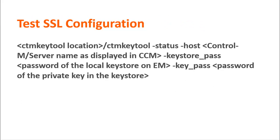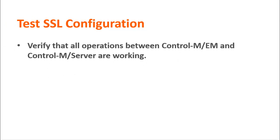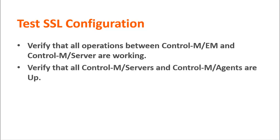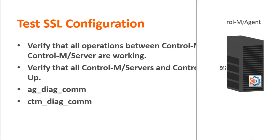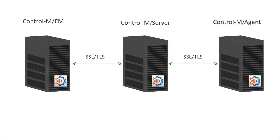Test the SSL configuration between Control-M EM and Control-M Server by running the CTM key tool on Control-M EM. Verify that all operations between Control-M EM and Control-M Server, such as job ordering, are working. From the CCM, verify that all Control-M Servers and Control-M Agents are up. Test the connection between Control-M Server and Control-M Agent by running the AG-DIAG-COM and CTM-DIAG-COM utilities. SSL is now configured between Control-M EM Server and Control-M Server in Zone 2 and Control-M Server and Control-M Agent in Zone 3.